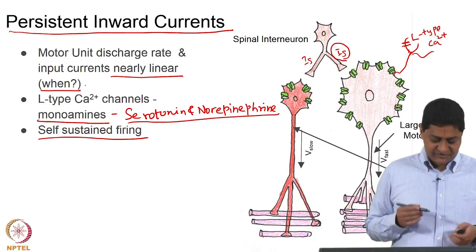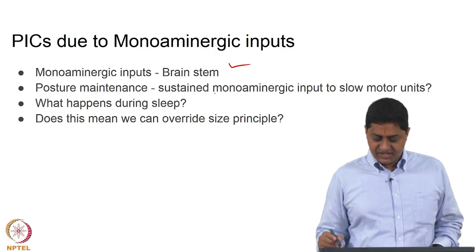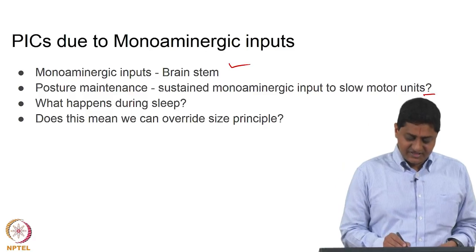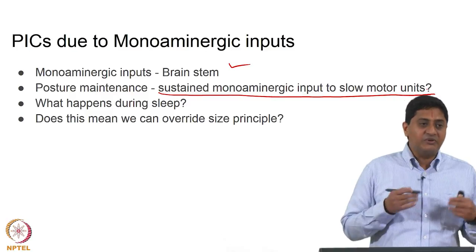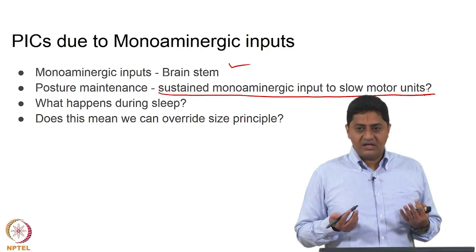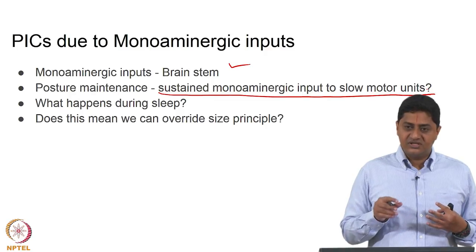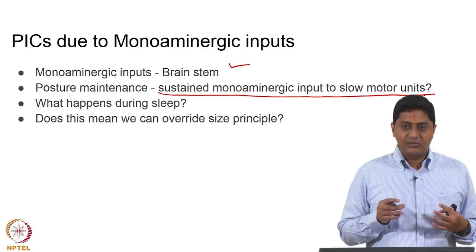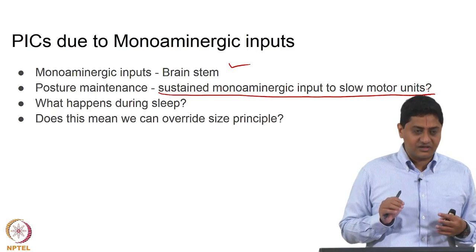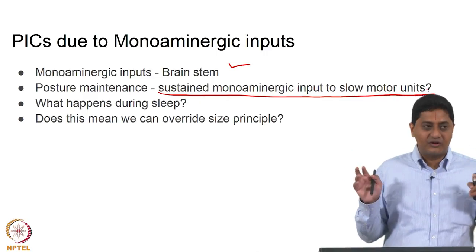This could be one purpose of persistent inward currents. The monoaminergic input comes from the brainstem, and posture maintenance is believed to be due to sustained monoaminergic input to slow motor units. What happens during sleep? These posture maintenance mechanisms are withdrawn — the monoaminergic input to the posture-maintaining muscles is withdrawn temporarily until you wake up, switching off the persistent inward currents so the person can sleep with relaxed muscles.